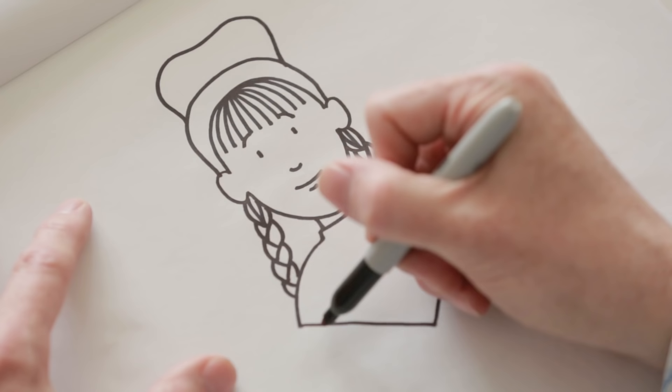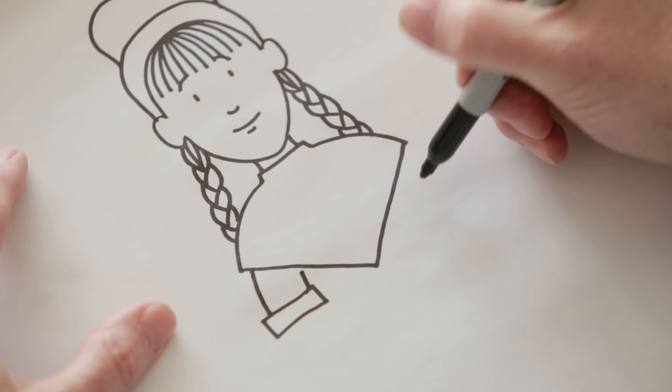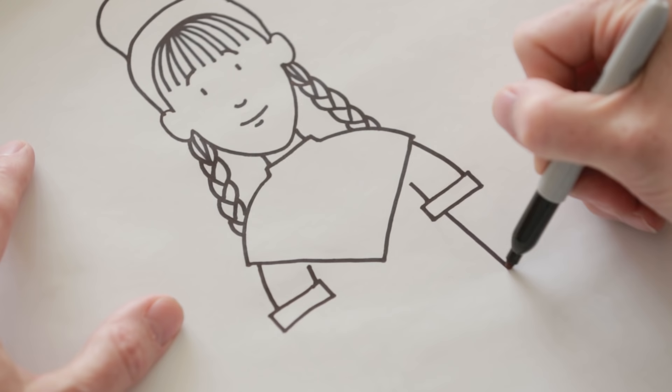So next, let's draw her arms. Okay, so she's wearing a brown dress which is made from pretty scratchy material. It's short-sleeved and it has white cuffs at the end of the sleeves.